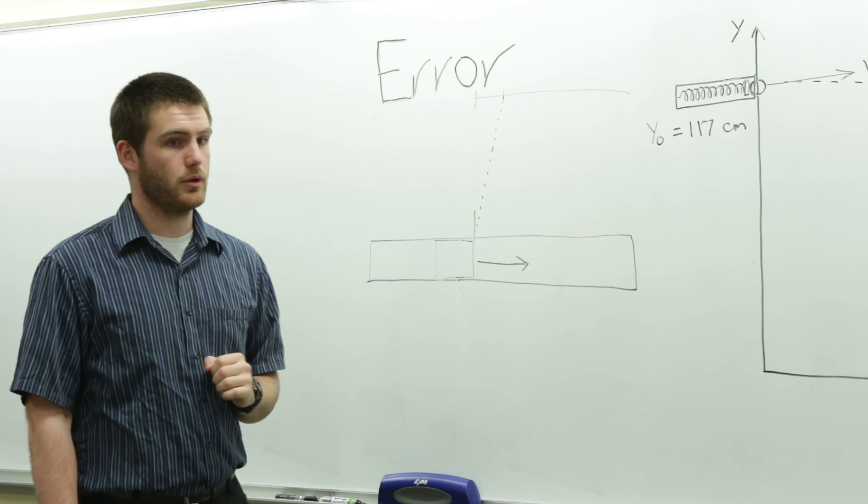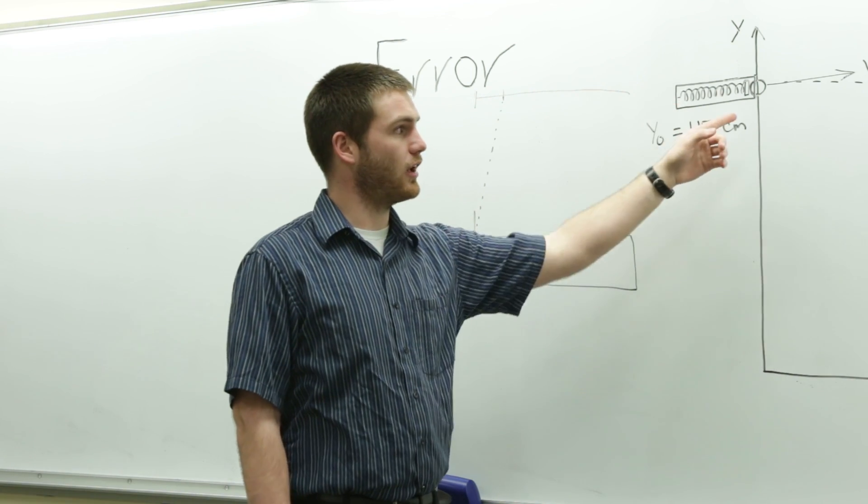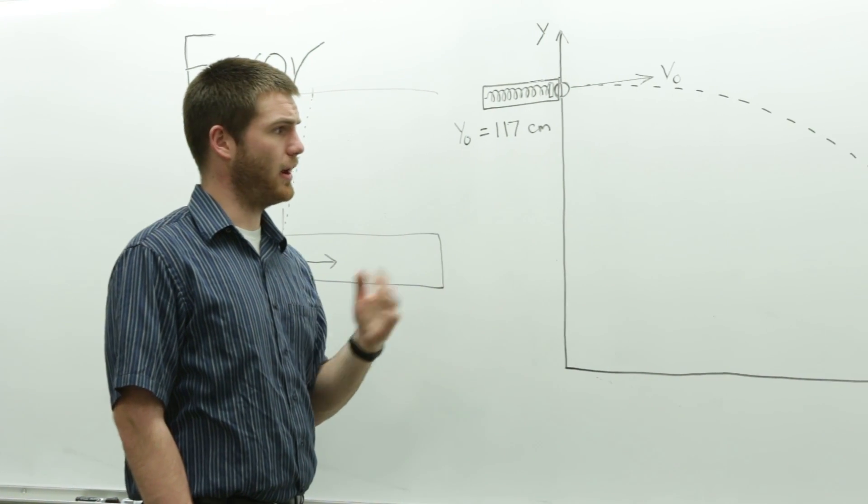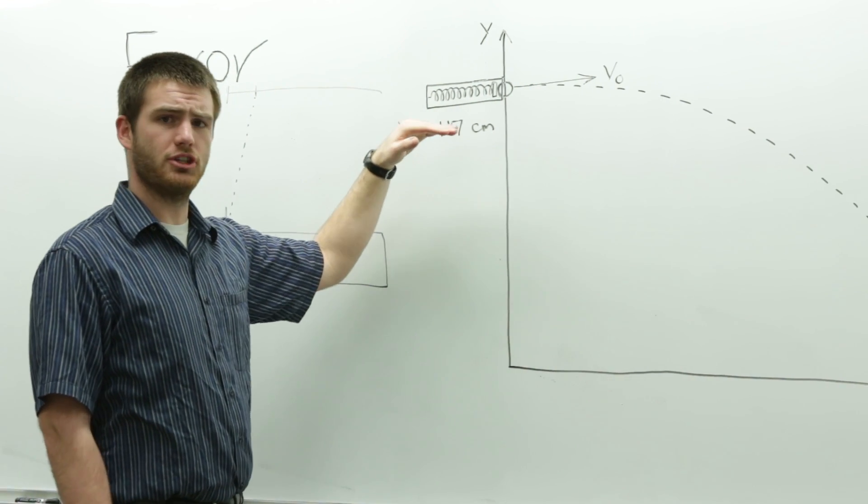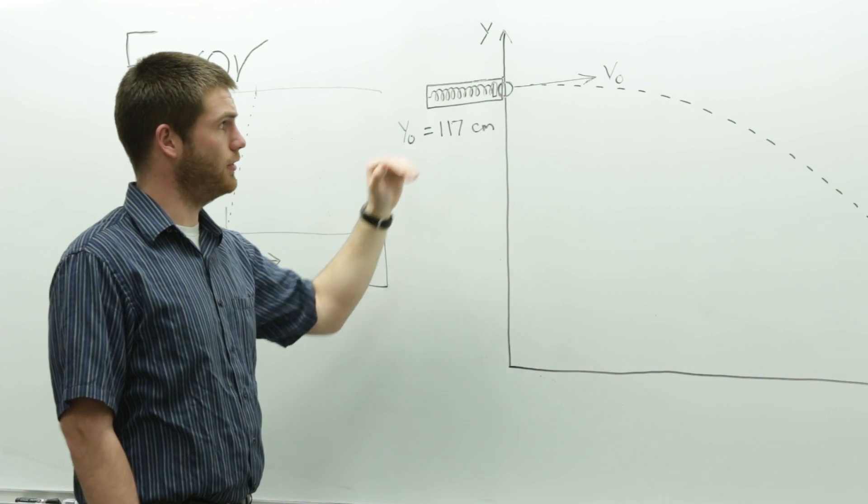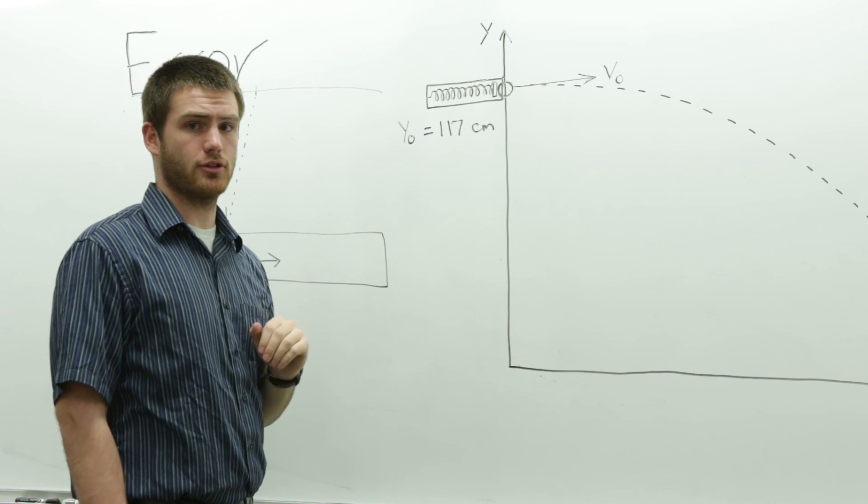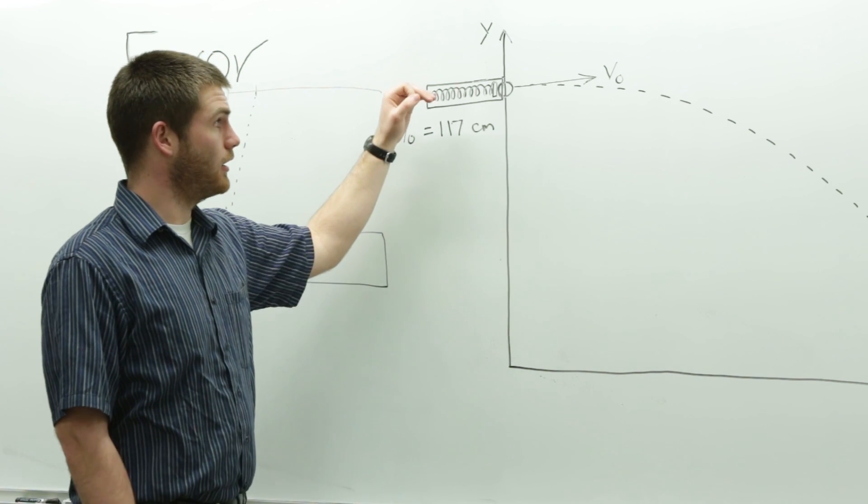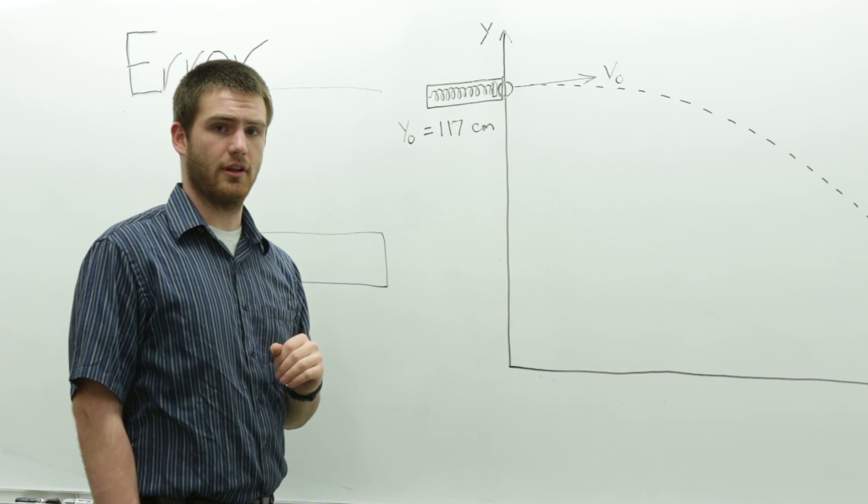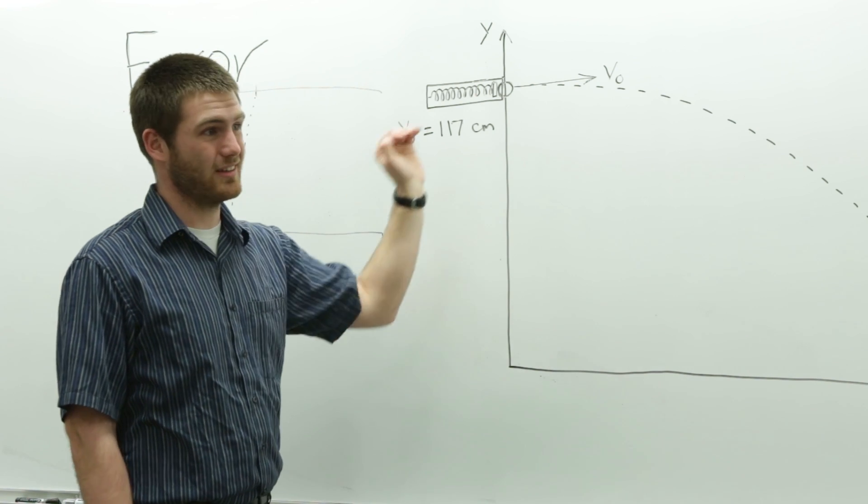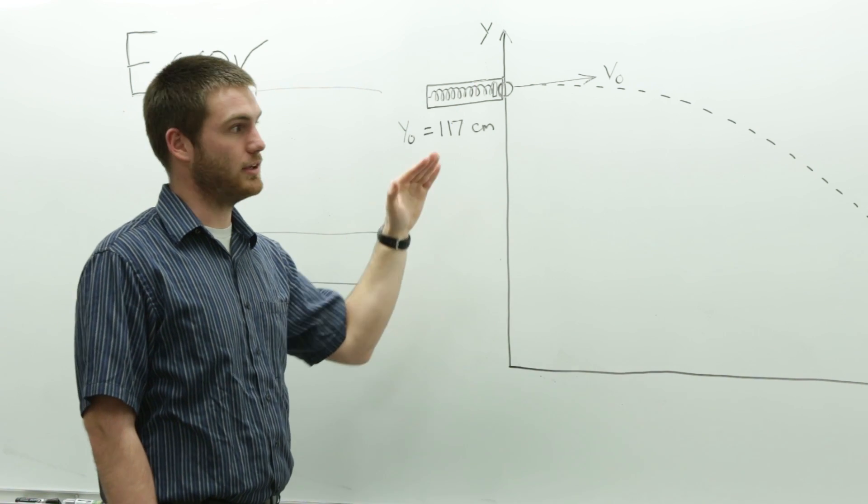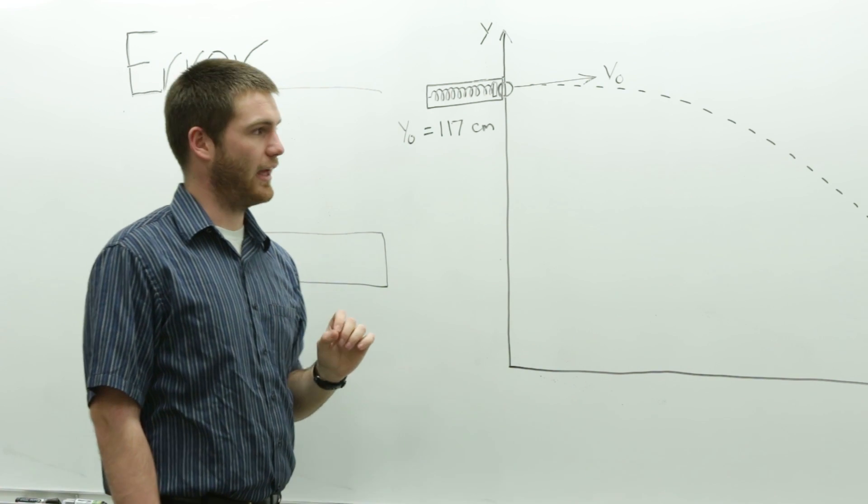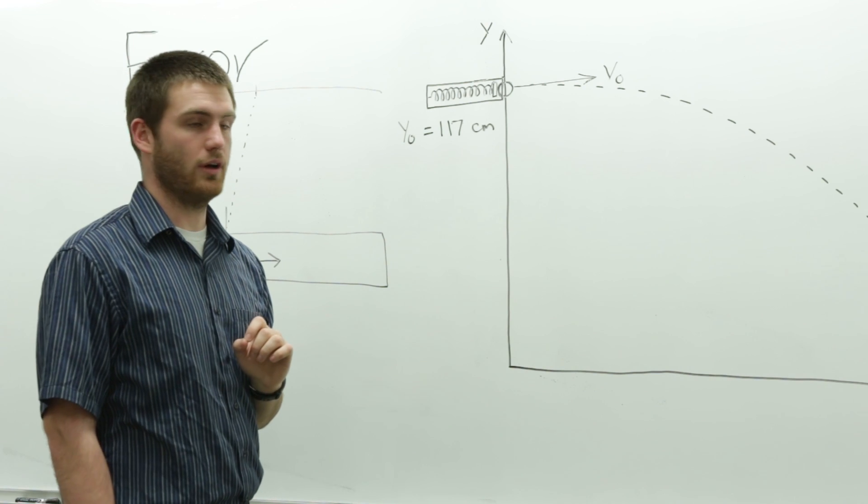Another error is that we were assuming the initial velocity of the ball would remain the same no matter what. However, we were changing the angle of the launcher. When you change the angle of the launcher, ideally the initial velocity should stay the same. However, there's an actual spring in there, and with a real spring, you're going to get slightly less initial velocity when you calculate it at an angle due to gravity. So there's a little bit of error in that, and that could interfere with our results as well.